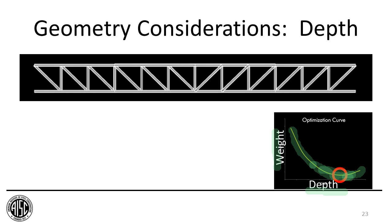If we ruled the world, we'd want to be at the bottom of that curve. However, there are offsetting costs in the building — the deeper you make the truss, the more cladding you need, and if it's a floor truss, floor heights increase, adding length to vertical transportation systems and ducts. The actual optimum depth for a truss really depends on the entire building system. These conversations need to occur with contractors, other consultants, and the architect to arrive at the most optimum depth.